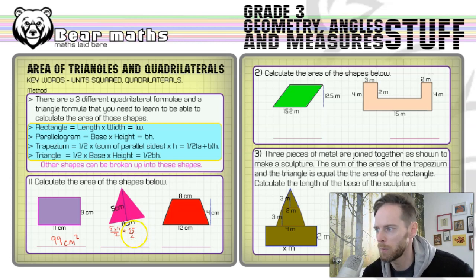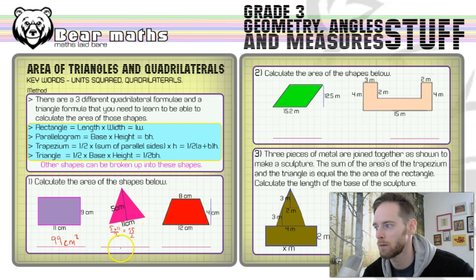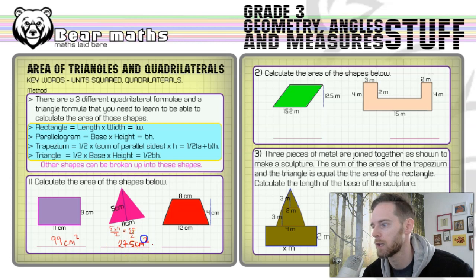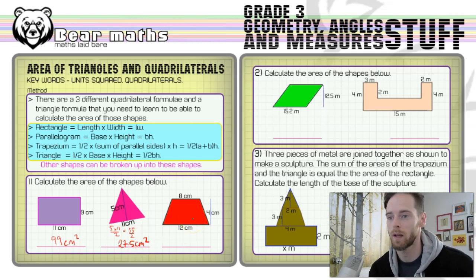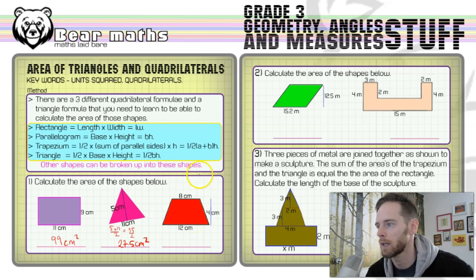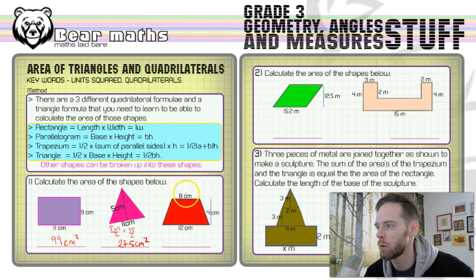Half of 55: half of 5 is 2.5, half of 50 is 25, so 27.5 centimeters squared is the answer to that question. All of these should be doable without a calculator on non-calculator papers. Next is a trapezium.